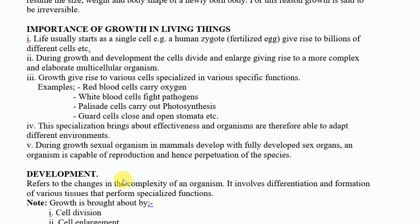During growth and development, an organism multiplies into many cells, and those cells tend to undergo cell differentiation — changing from one type of cell to another. The third importance of growth is that growth gives rise to various cell specializations for specific functions. For example, red blood cells are involved in carrying oxygen, white blood cells fight pathogens, palisade cells carry out photosynthesis, and guard cells open and close stomata. All of these cells arise from the growth process and specialization of cells. This specialization brings about effectiveness, and organisms are therefore able to adapt to different environments.